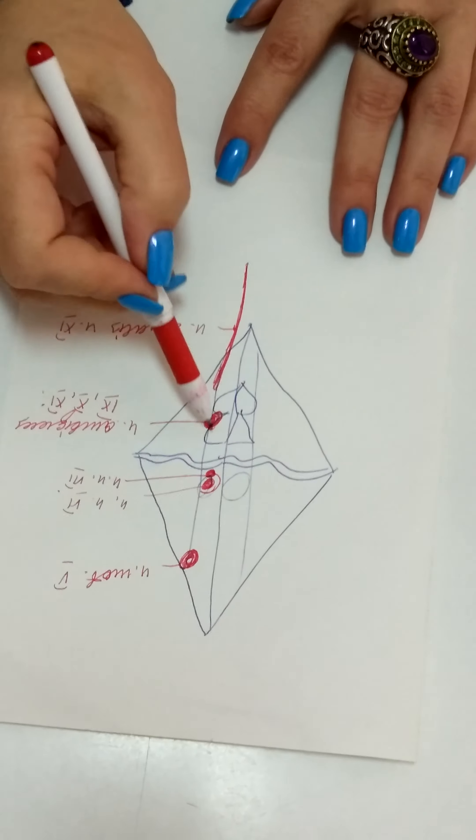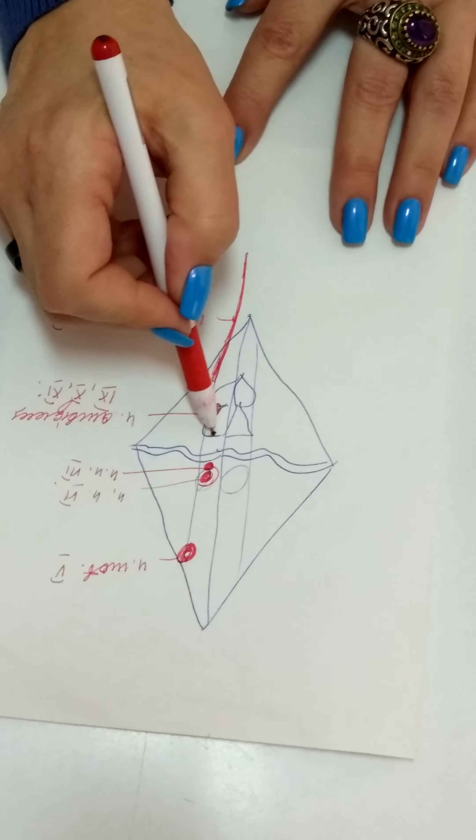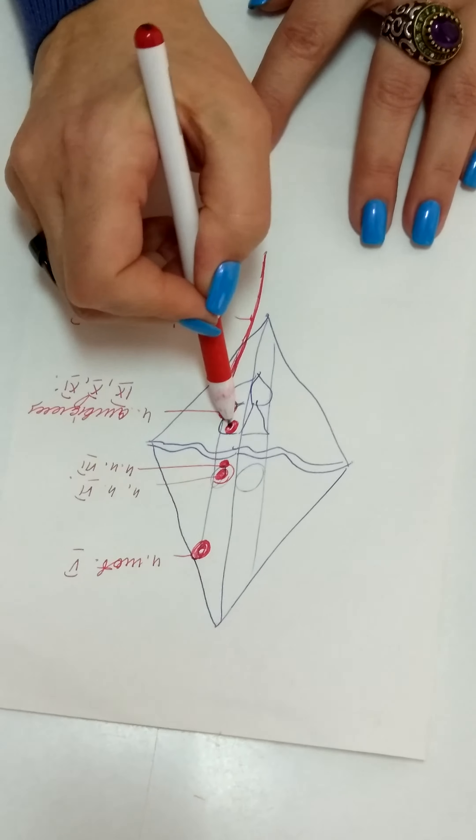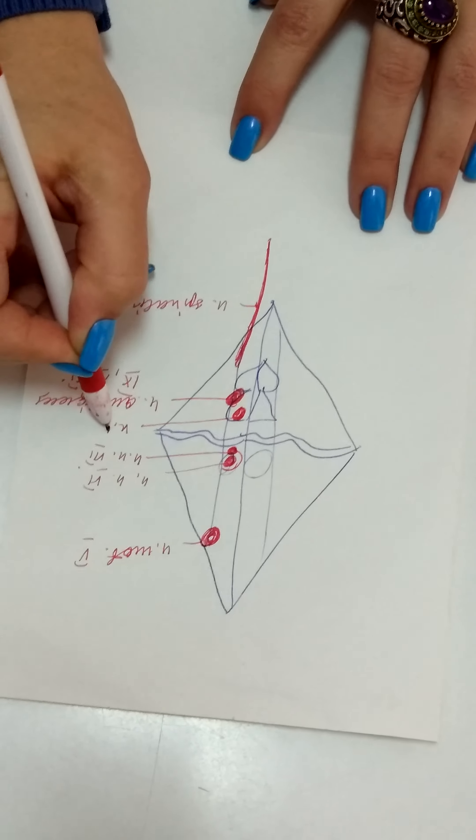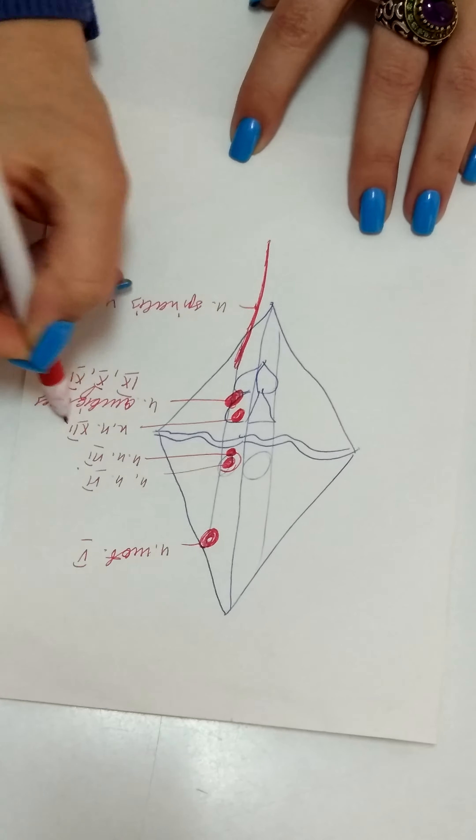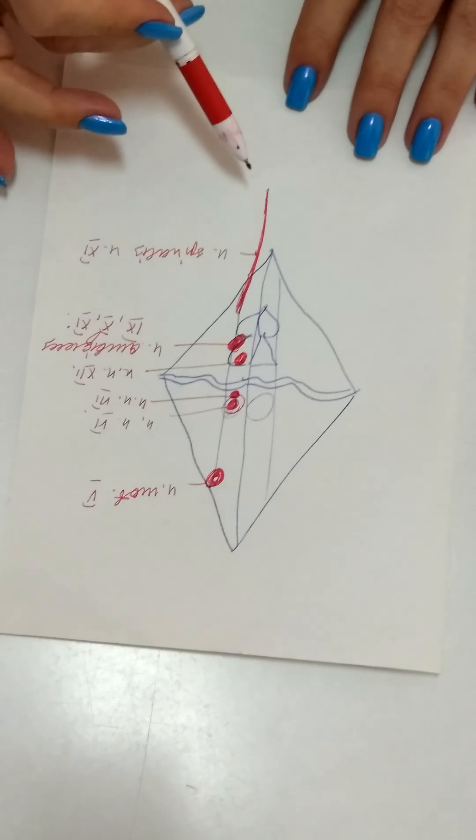At last, in the trigonum of hypoglossal nerve, nucleus nervi hypoglossi is present - the twelfth pair. They are all motor nuclei.